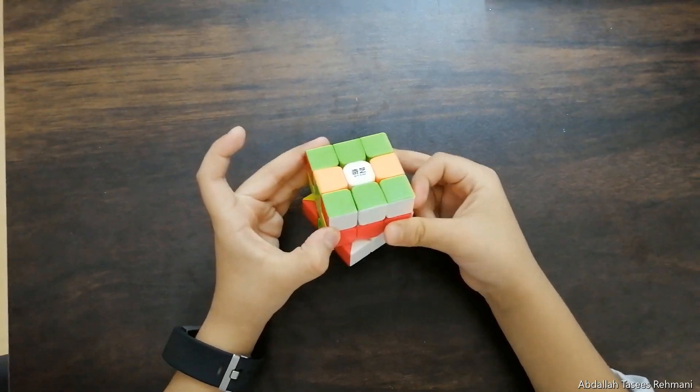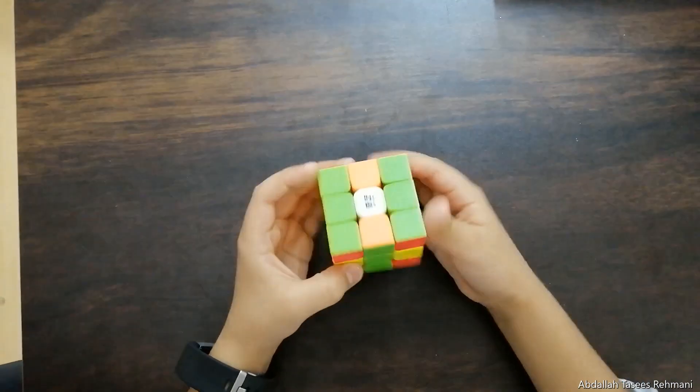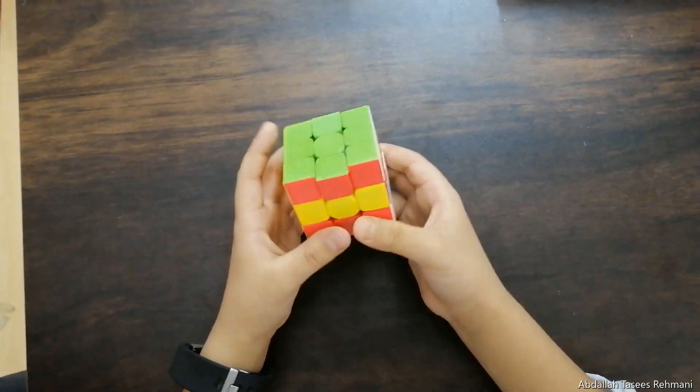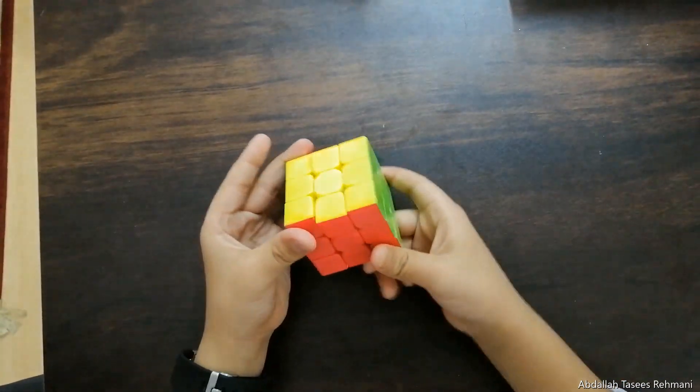U, D dash. Now turn the cube like this. Green is up, so this middle finger like this. Now turn the cube like this. Red, and it's solved.